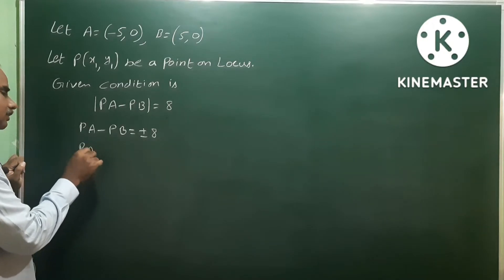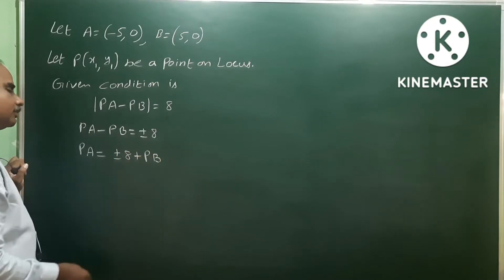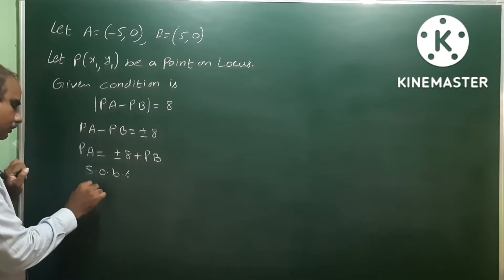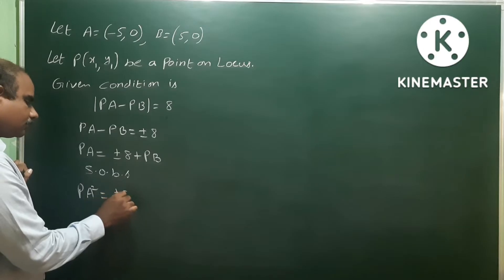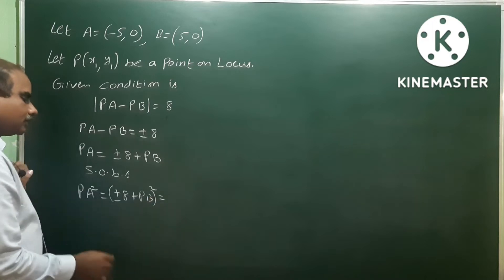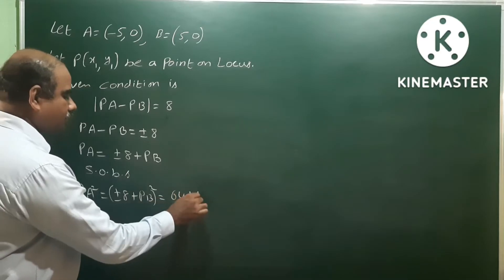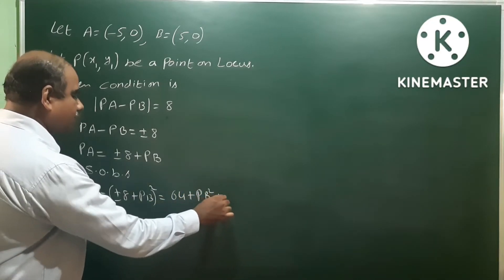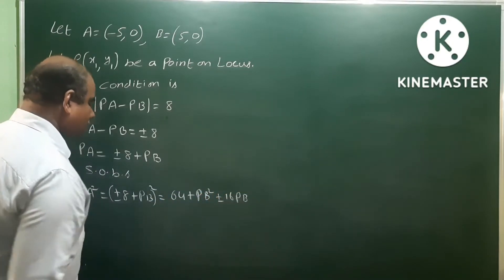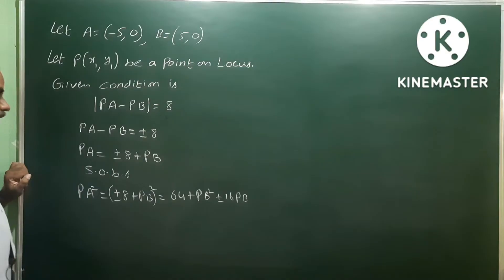So PA equals plus or minus eight plus PB. Now squaring on both sides: PA squared equals (plus or minus eight plus PB) whole square. Using the (a + b)² formula: a² plus 64 plus b² means PB squared, plus or minus two times a times b, which is 2 into 8 equals 16 PB. So PA² equals PB² plus or minus 16 PB plus 64.